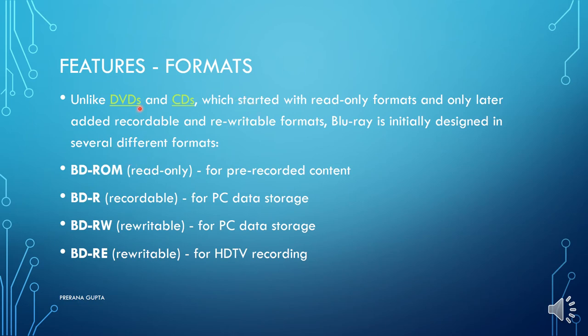Now looking at features of Blu-ray disc, starting with formats. Unlike DVD and CDs, which started with read-only formats and only later added recordable and rewritable formats, Blu-ray was initially designed in several different formats: BD-ROM for pre-recorded content, BD-R (recordable) for PC storage, and BD-RE (rewritable) for PC use. From the start, all these versions were available.